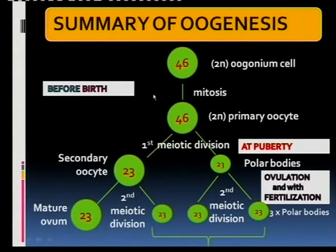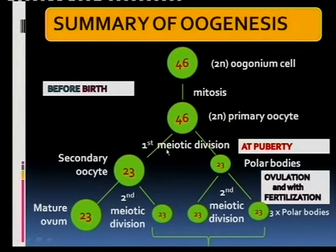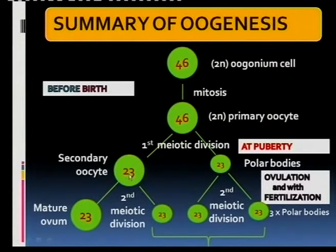Before birth, mitosis takes place so many primary oocytes are formed, and at birth this process stops. Then at puberty, the primary oocyte, which is diploid, undergoes the first meiotic division, forming the first polar body and the secondary oocyte. The secondary oocyte is found in the Graafian follicle.